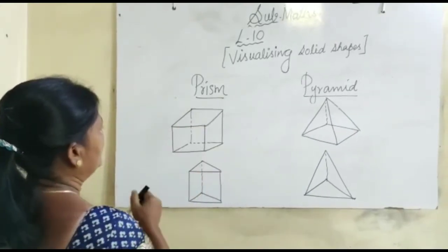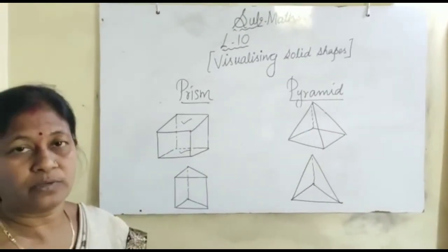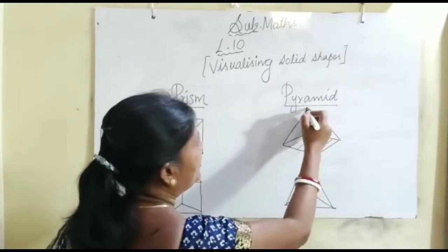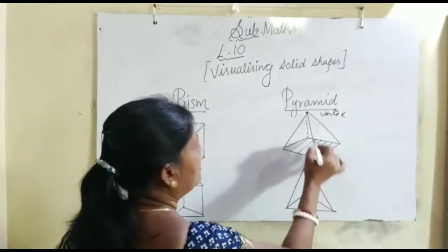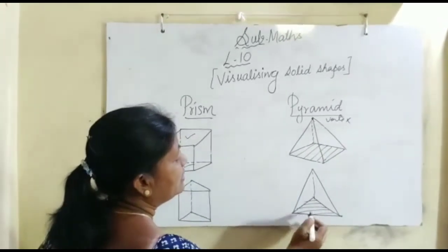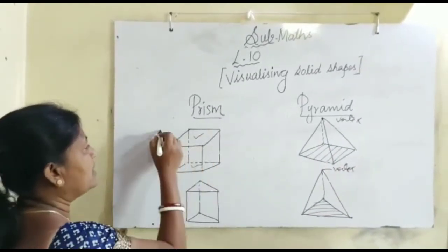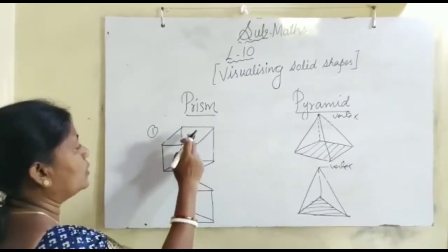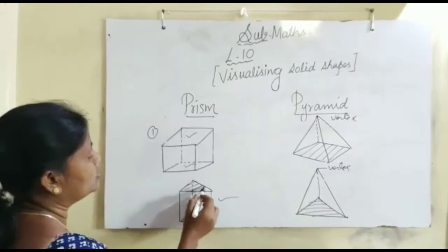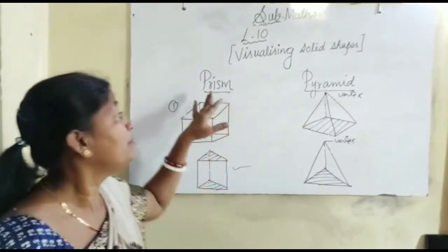In a prism, the top and the base are congruent figures. For example, in this figure the top is a shape and the base is a congruent shape. But in the case of a pyramid, the base is a square whereas the top is a vertex — a single point — so the top and base are not congruent. Another example of a pyramid: the base is a triangle and the top is again a point, a vertex. So 3D shapes where the top and base are congruent polygons are called prisms.